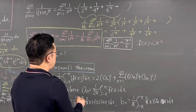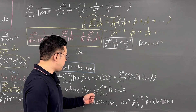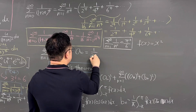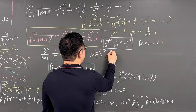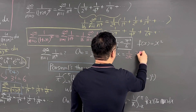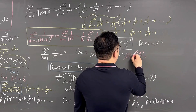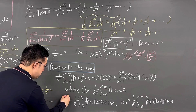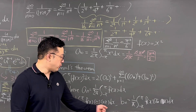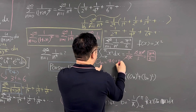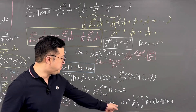Working this out: a₀ = (1/2π) times the integral from -π to π of x² dx = (1/2π) times (2π³/3) = π²/3. For aₙ, using integration by parts twice, we get aₙ = 4(-1)ⁿ / n². And bₙ = 0, because the integrand x² is an even function.